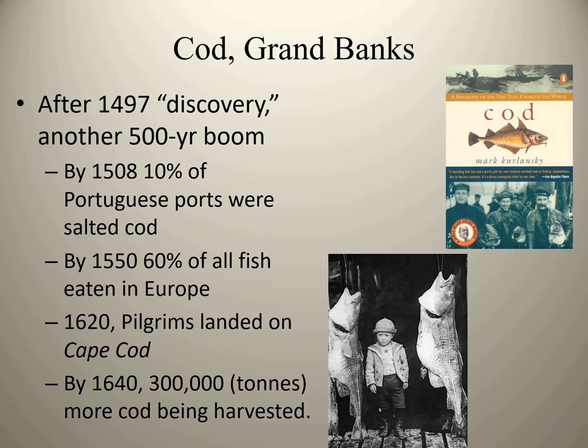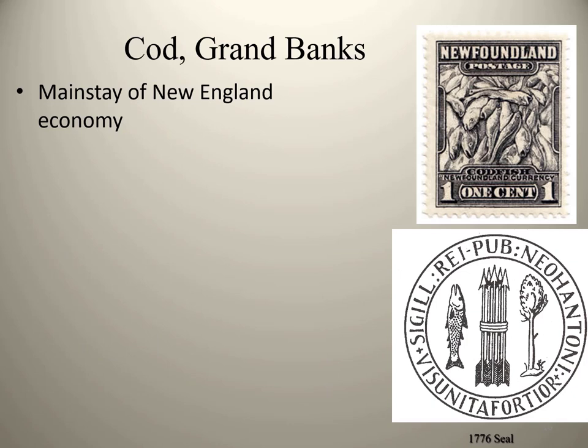From 1640 until about 1960 — over 300 years — they continued to land over 300,000 tons of cod annually, which is about 660 million pounds per year. Then in the 1960s, changes in technology occurred. Factory trawlers came on the scene, and catches jumped from 300,000 tons to 800,000 tons in the 1960s. Cod was the mainstay of the New England economy and probably gave the colonies the material wealth they needed to fight for independence.